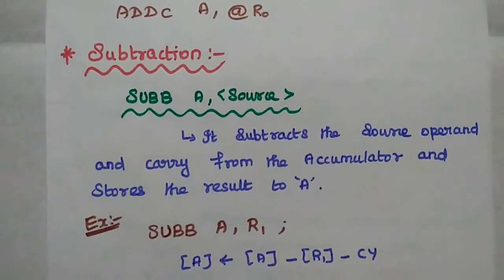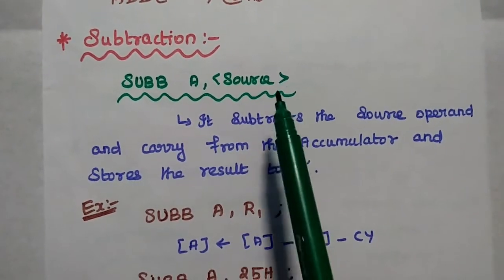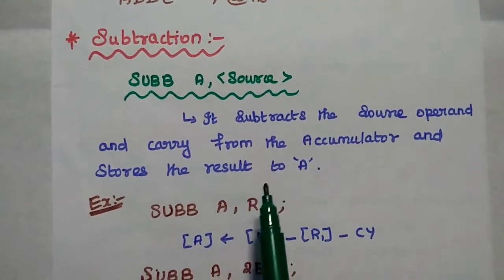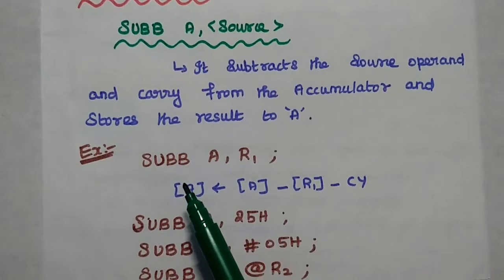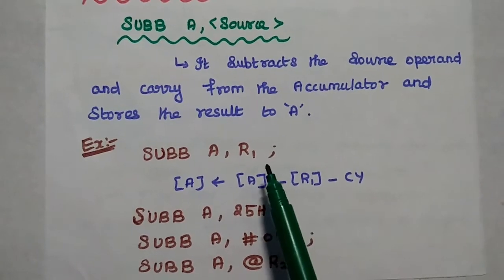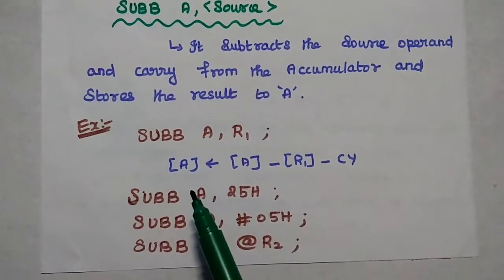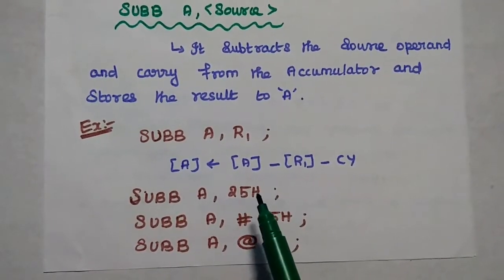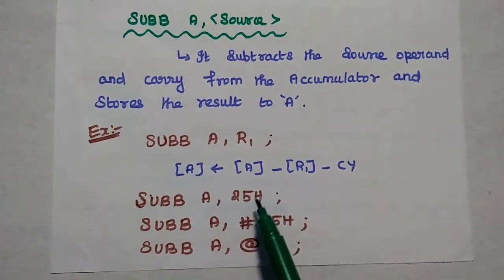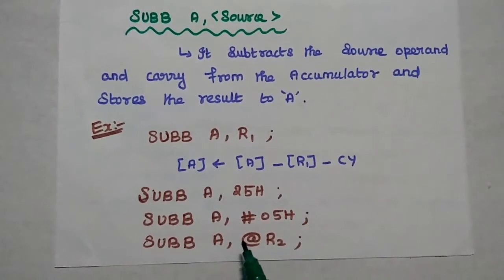The next one is subtraction. We use the instruction SUBB A, source to subtract the source operand and carry from the accumulator and store the result in this accumulator. For example, SUBB A, R1 subtracts the content of R1 and carry from this accumulator. SUBB A, 25H is a 2-byte instruction. SUBB A, #05H is immediate addressing mode. SUBB A, @R2 is indirect addressing mode.